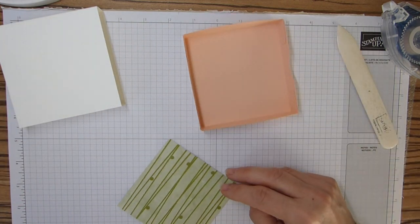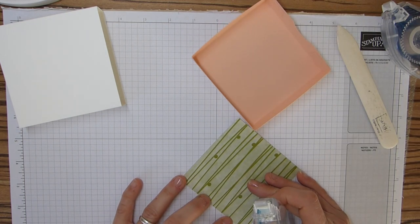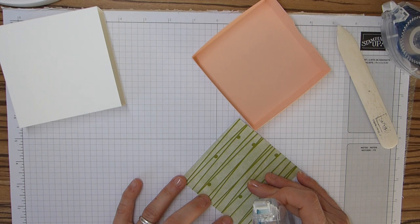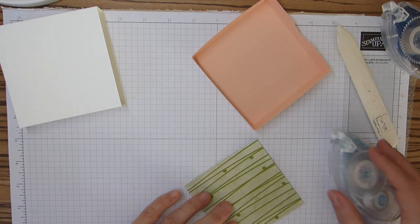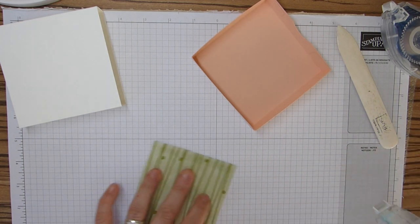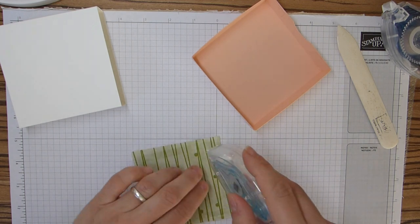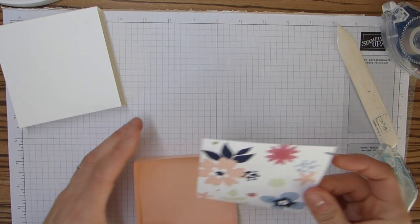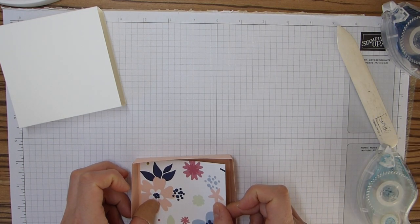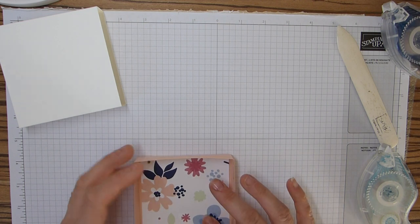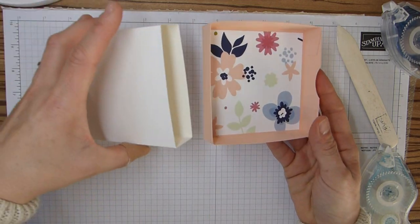We need to pop some of our DSP inside. This just measures three and six eighths by three and six eighths of an inch, or 9.6 by 9.6 centimeters. I'm just going to pop that in the base there. There's my beautiful drawer liner.